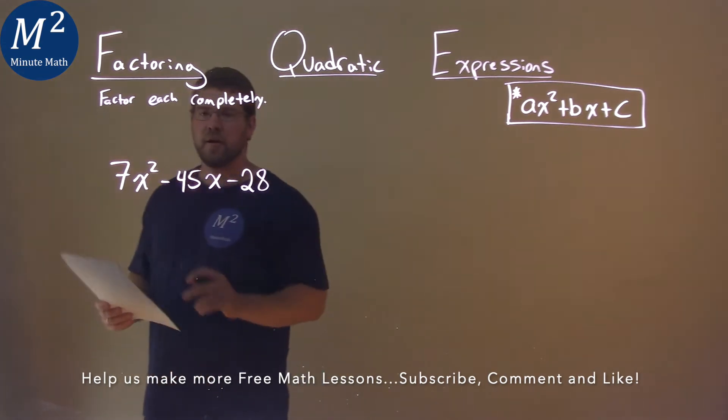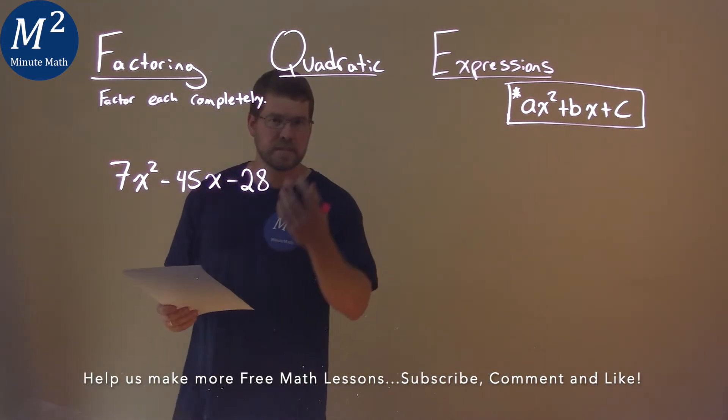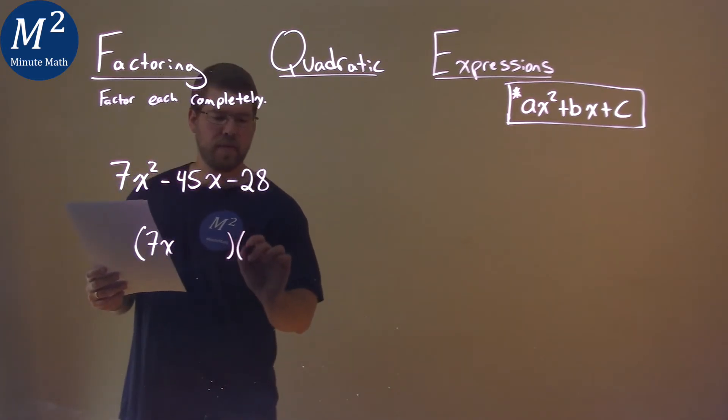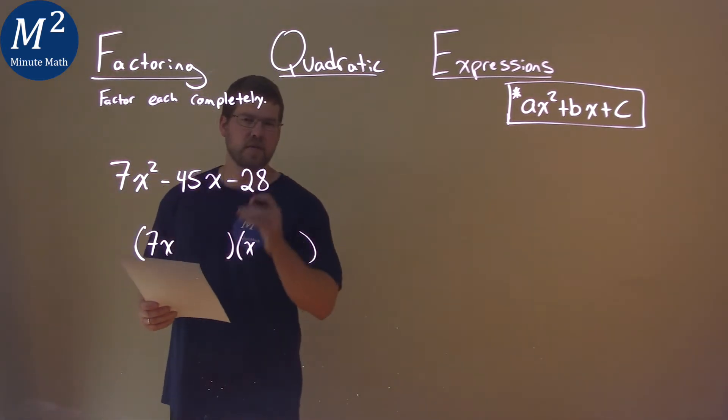I noticed my a value. My a value is a prime number, 7. So we know this is going to be in some form of 7x and then an x like this. Let's keep that in mind.